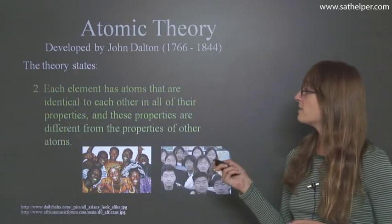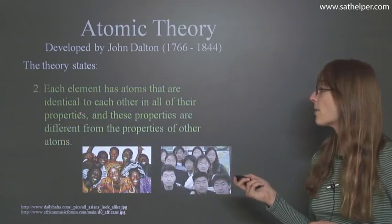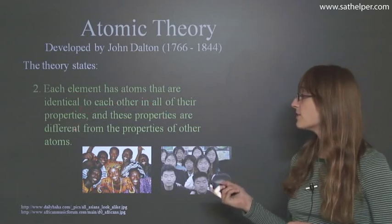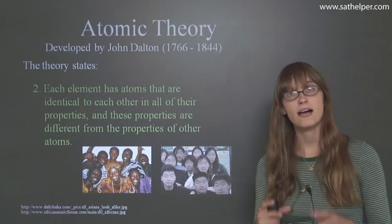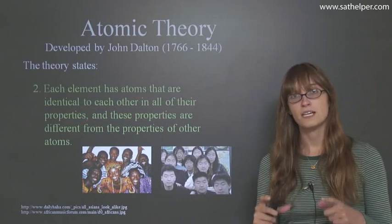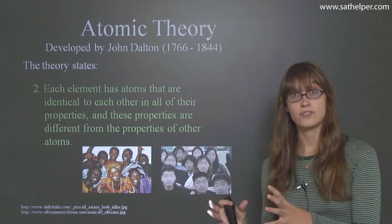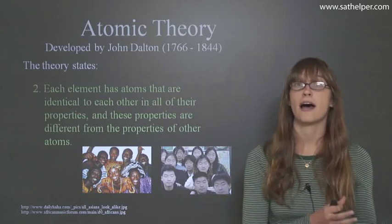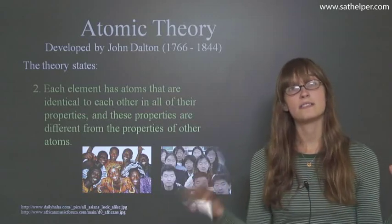Each element has atoms that are identical to each other in all of their properties, and these properties are different from the properties of other atoms. So when you have an element, it's very unique. All gold atoms are the same and they behave the same. All silver atoms are the same and they behave the same. And gold and silver atoms are very different from each other.